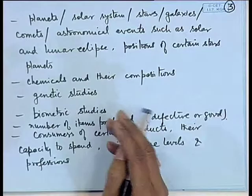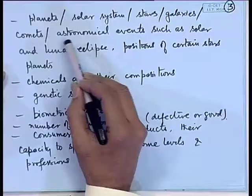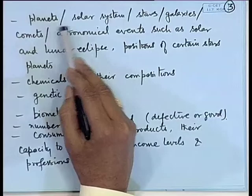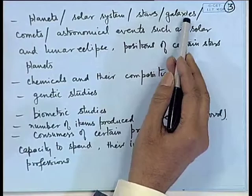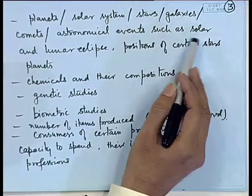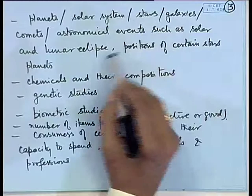The collection and utilization of statistics is not only done in the government or social sector; it is extremely useful in sciences, engineering, and technological studies as well — for example, in physics, chemistry, biotechnology, and economics. Physicists are interested in the movement of planets, the number of planets in the solar system, the number of stars in a galaxy, the number of galaxies, comets, astronomical events such as a comet hitting a planet, and solar or lunar eclipses. The data on all these things is extremely useful to cosmologists.